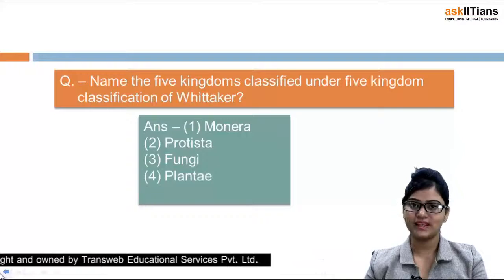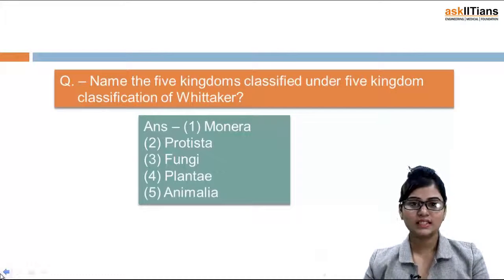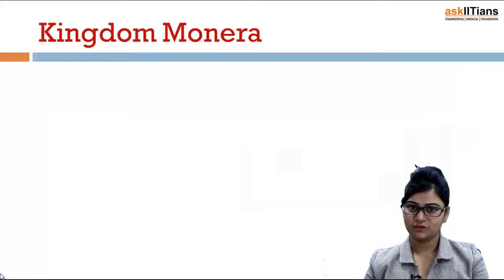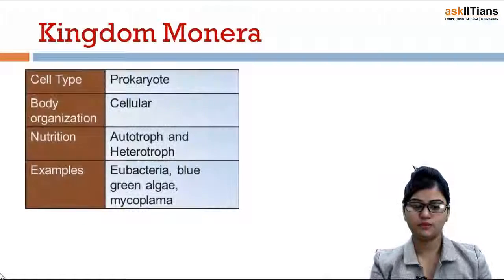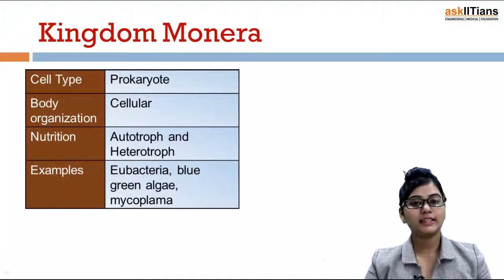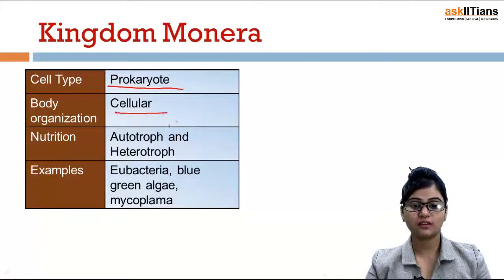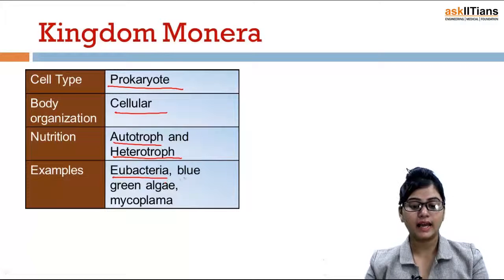Let's take Kingdom Monera first. Cell type in Kingdom Monera is prokaryotic, body organization is cellular, nutrition is either autotroph as well as heterotroph. Examples include eubacteria, blue-green algae, and mycoplasma.